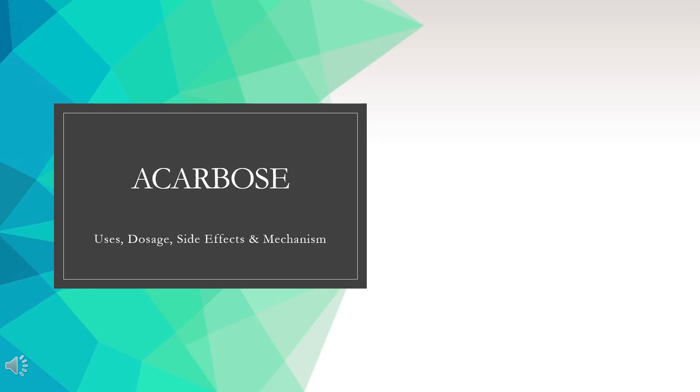Acarbose is an alpha-glucosidase inhibitor used adjunctly with diet and exercise for the management of glycemic control in patients with type 2 diabetes mellitus. In this video, let's find out: What is acarbose? What is acarbose used for? Contraindications. What are the side effects of taking acarbose? How does acarbose work? How to use acarbose?